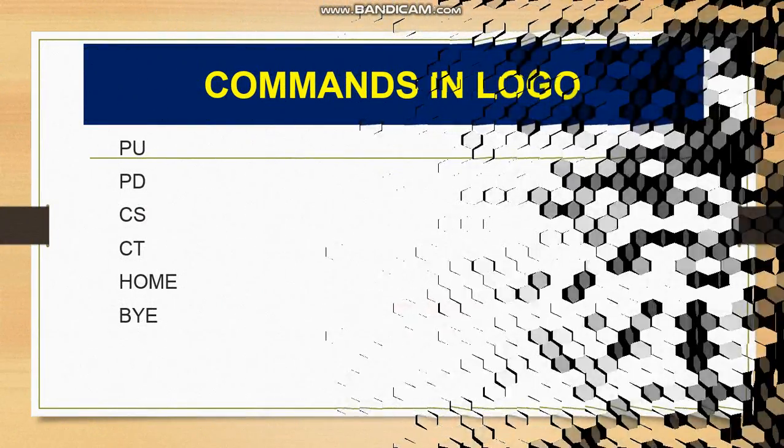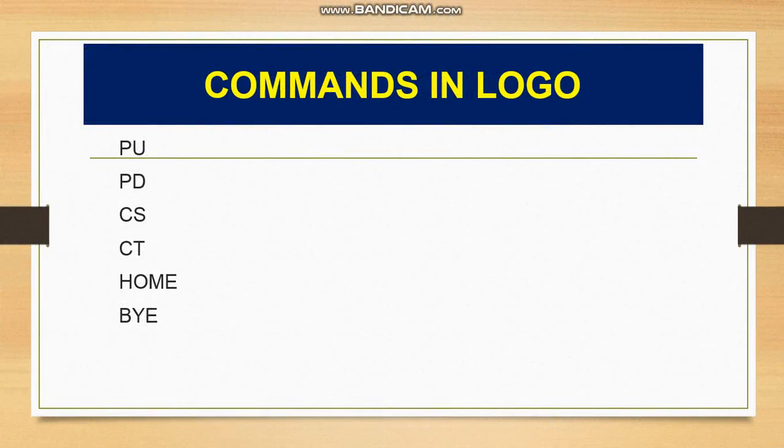After that we have PU, which means pen up. The function of the pen up command is that it is used to move the turtle in the forward direction without drawing a line. In the forward command the turtle draws a line, but with the PU command it moves without drawing a line.